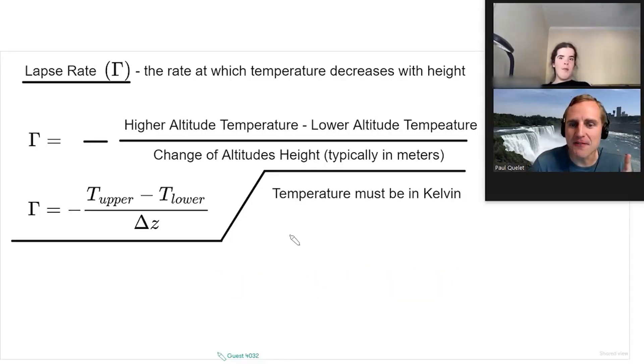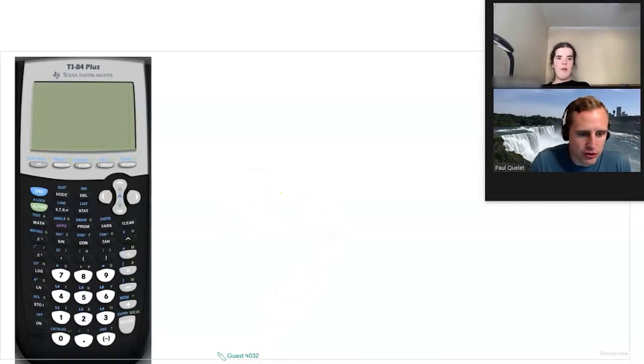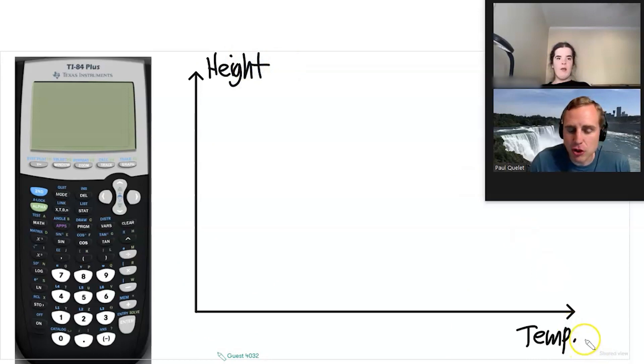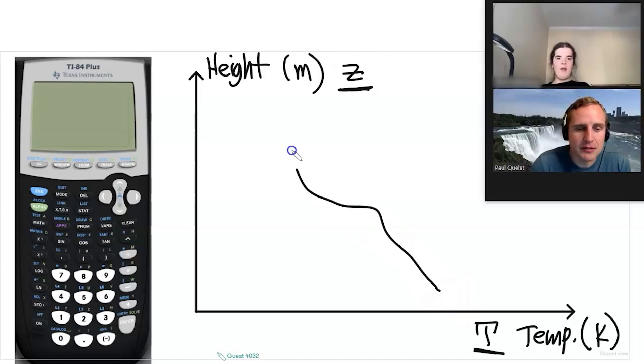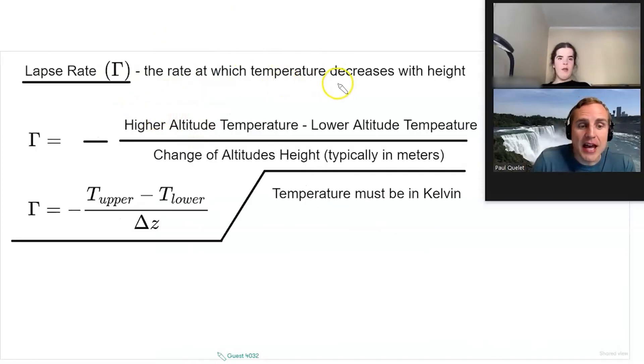Part of the reason the lapse rate is defined as it is shown, we assume that the temperature is decreasing with height in the troposphere. If we do a plot of temperature on this axis and then height on this axis, temperature is usually going to be in Kelvin or degrees Celsius. Height would be typically in meters. The temperature is generally going to go like this. It could have some wiggles, but the temperature decreases with height. That's the lapse rate.